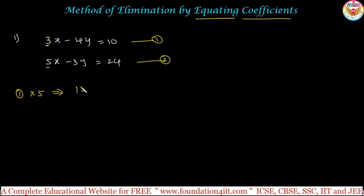Let us see now. 5 into 3x, okay, 15x minus 5 times 4, so 20y is equals to 5 into 10, 50. Now equation 2, we should multiply by 3 because equation 2 is 5x. 5x into 3 is 15x minus 3 times 3 is 9y and 3 into 24 is 72.